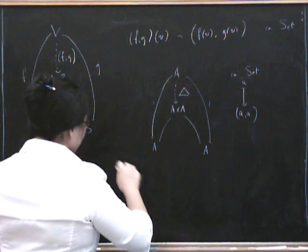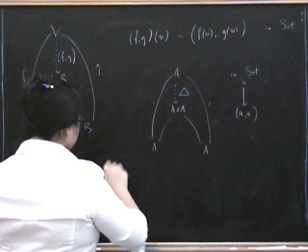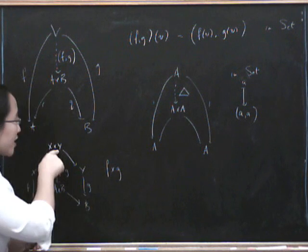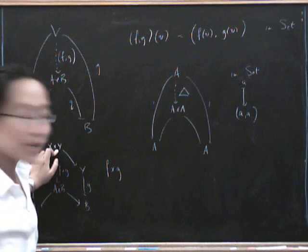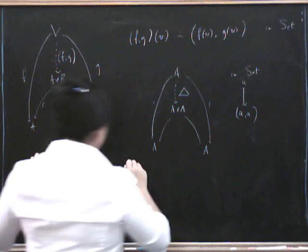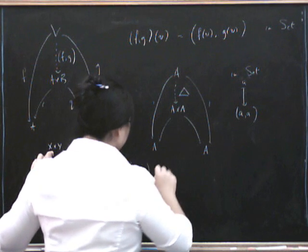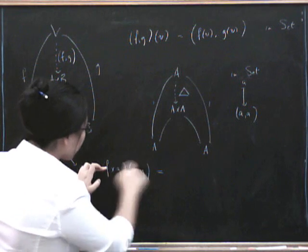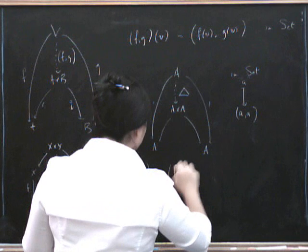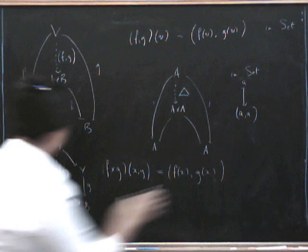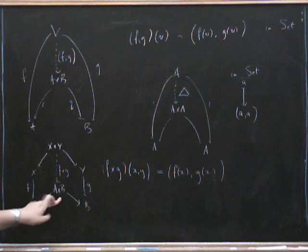And if you think about what it does in sets, the point is that you have F cross G, but what it's going to act on is something that was already in the product. So this acts on something which is already a pair, X comma Y, and you do it point-wise. So F acts on the first bit and G acts on the second bit, and that gives you the ordered pair in A cross B.